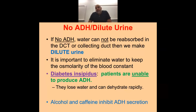Alcohol and caffeine inhibit ADH — that's why you break the seal. It doesn't matter how much you try not to urinate after having some drinks; you're going to pee and lose free water. That's a big part of why people get hangovers — they dehydrate.